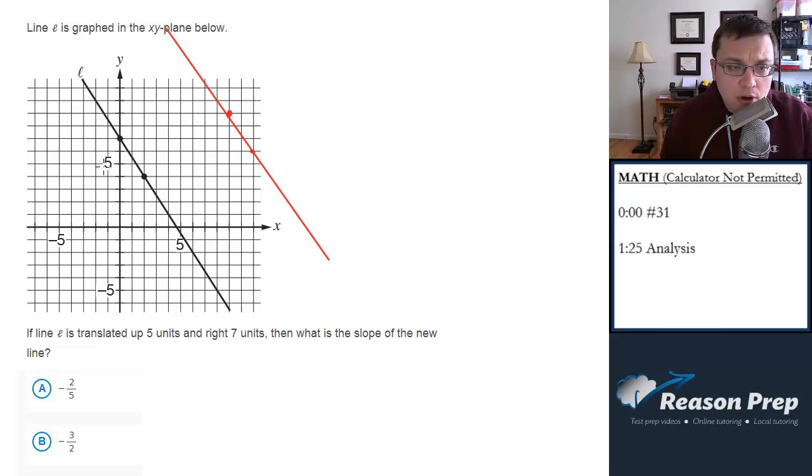Notice first, what's the slope of the old line? Let's calculate this either by doing the formula y2 minus y1 over x2 minus x1 by finding two points, or what I think is easier, doing rise over run. Slope is rise over run. If we start with this point, we go down 3 units—that's negative 3—and then across 2 units to the right, so that's negative 3 halves is the slope of our original line.